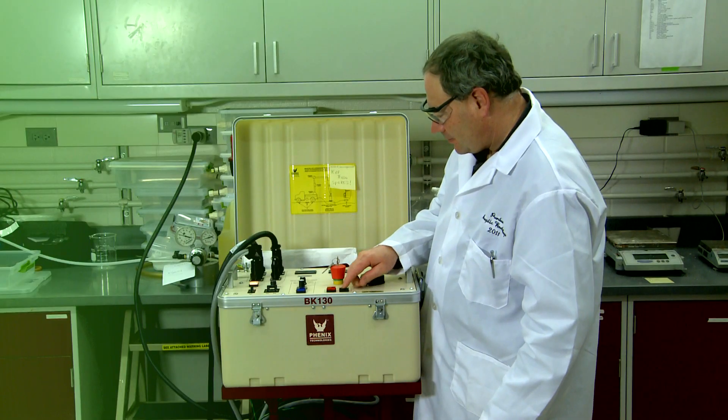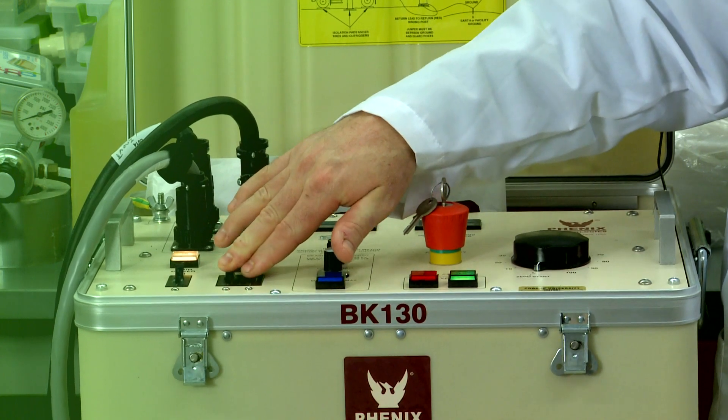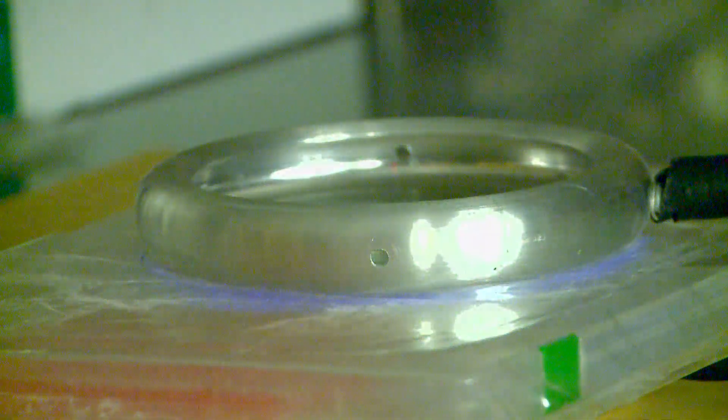In essence, the package just becomes an insulator and the voltage will pass through the package into the gas that's contained inside the package. This process creates a wide variety of bacteria-killing molecules, including ozone, nitrogen oxides, hydrogen peroxide, and many others.